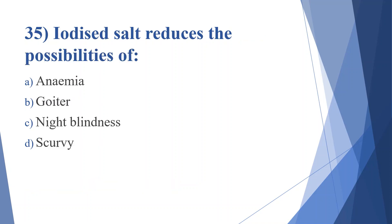Thirty-fifth question: iodized salt reduces the possibilities of. Option A: anemia. Option B: goiter. Option C: night blindness. Option D: scurvy. Answer is option B, goiter.